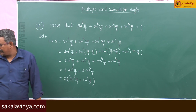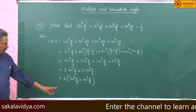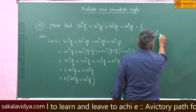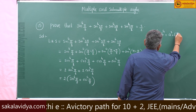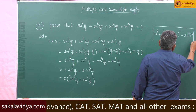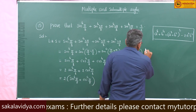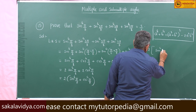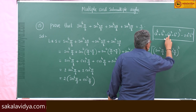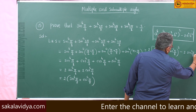Now observe this step — it is in the form a⁴ + b⁴. We know the algebraic identity: a⁴ + b⁴ = (a² + b²)² − 2a²b². Using this identity, we can write: 2·[(sin²(π/8) + cos²(π/8))² − 2·sin²(π/8)·cos²(π/8)].